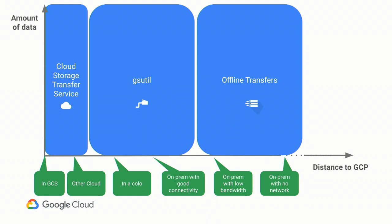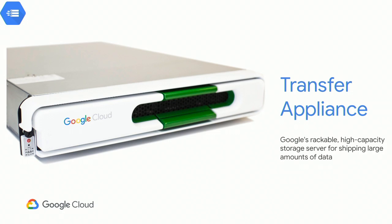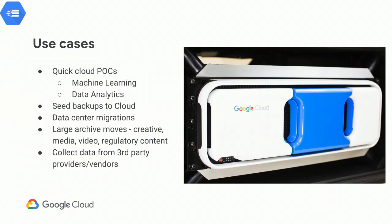That's where we talk about the offline transfer use case for situations where you have very little or no network bandwidth — for example, a data center up on a mountain somewhere. Google's product is called Transfer Appliance. The picture here is a 2U storage server that can be racked in your data center, with a usable capacity of about 80 terabytes. It's inexpensive — we ship it to you overnight, you rack it, load data to it, ship it back to us, and we upload the data for you.